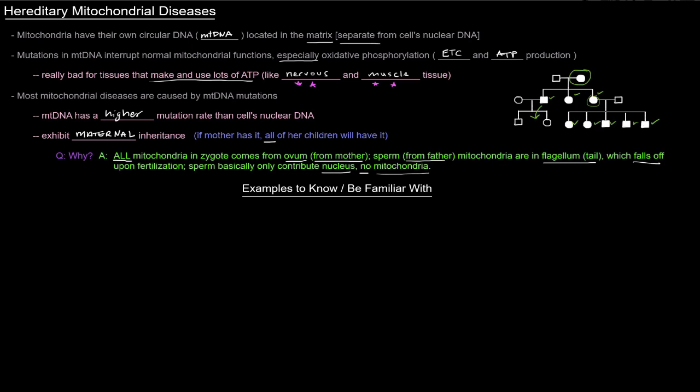All children start off as a zygote and they get their mitochondria entirely from their mother. So if that mitochondria is mutated, then all of the children are going to have that mutated mitochondria.